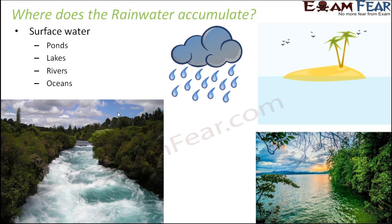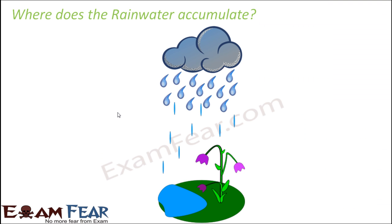If there is no rainfall for a very long time, you would have noticed that ponds, lakes, and rivers all start drying up. Not the oceans, but at least the ponds and lakes - you can very evidently see that they start drying up due to lack of rainfall. Some part of the rainwater also gets absorbed by the ground, and that is where we talk about groundwater.